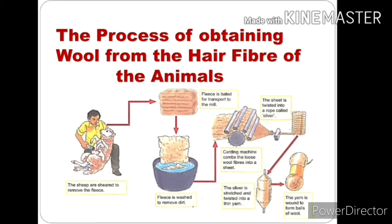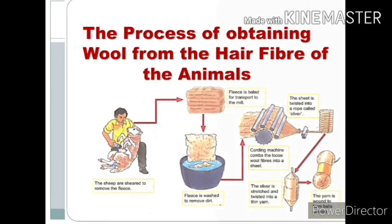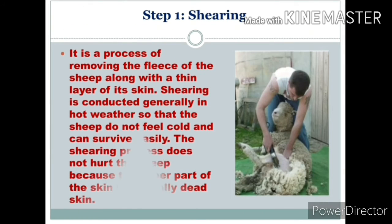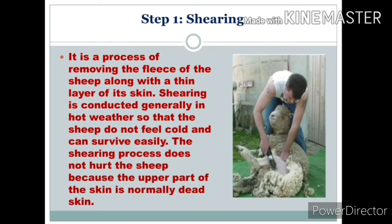The next topic is the process of obtaining wool from the hair fiber of the animal. The first step is shearing. It is a process of removing the fleece of the sheep along with a thick layer of its skin. Shearing is conducted generally in hot weather so that the sheep does not feel cold and can survive easily. The shearing process does not hurt the sheep because the upper part of the skin is normally dead skin.